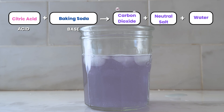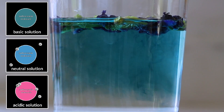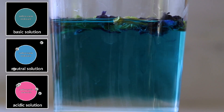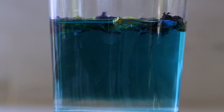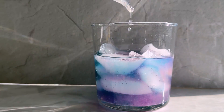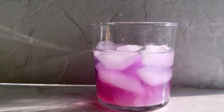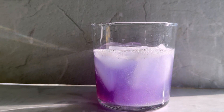To recap: butterfly pea flowers are a pH indicator because they contain anthocyanins, which change color in response to changes in pH. Originally, we added hot boiling water to the flowers, which is a neutral substance. When we add in something acidic like lemon juice or citric acid, the pH drops. Then when we add in baking soda, which is basic, that pH comes back up.